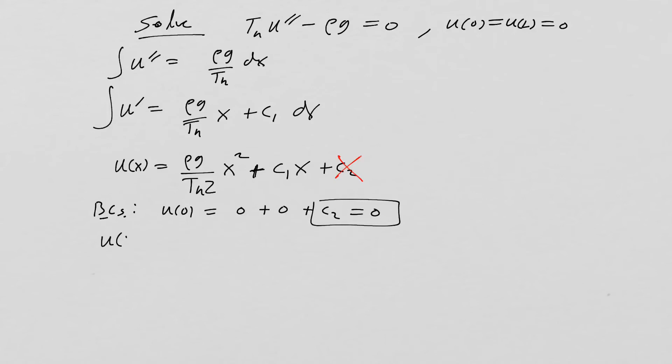So we can kill that off from our problem. And finally, u at L, the other end of the string, is going to be ρ·g over T_h·2 L squared plus C1·L. And that's equal to zero. So we should be able to solve for C1 is going to be equal to negative ρg over T_h times two times L after we divide out there. So we found our other parameter.